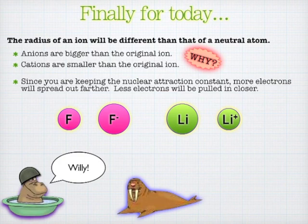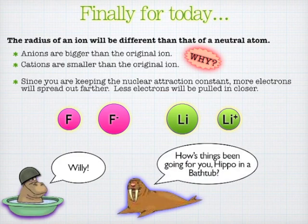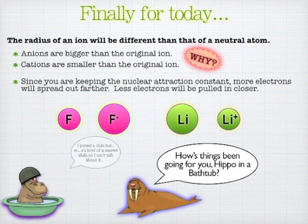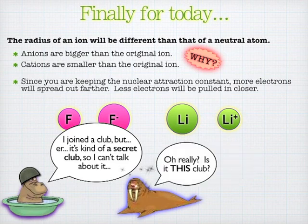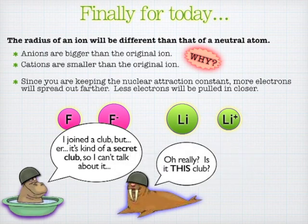The idea of radius is extremely important. What we'll do after this is talk about two more trends: the idea of ionization energy, which is how easy it is to remove electrons; electron affinity, which is how badly atoms want electrons; and then electronegativity, which is a super important trend that we've already touched on before, but there's more where that came from.